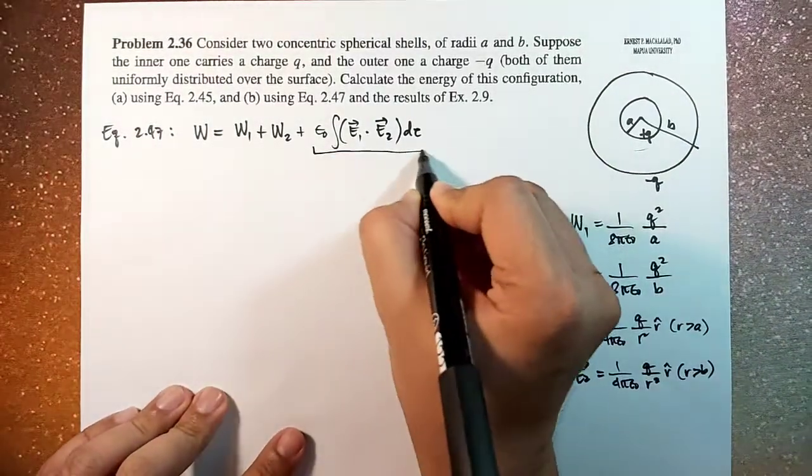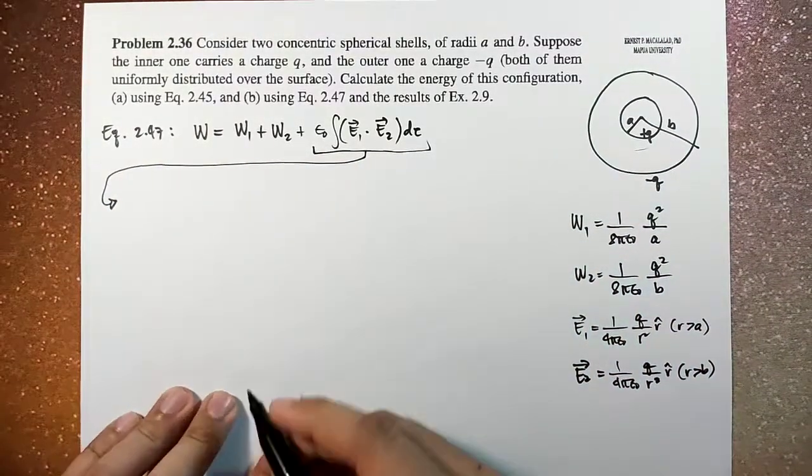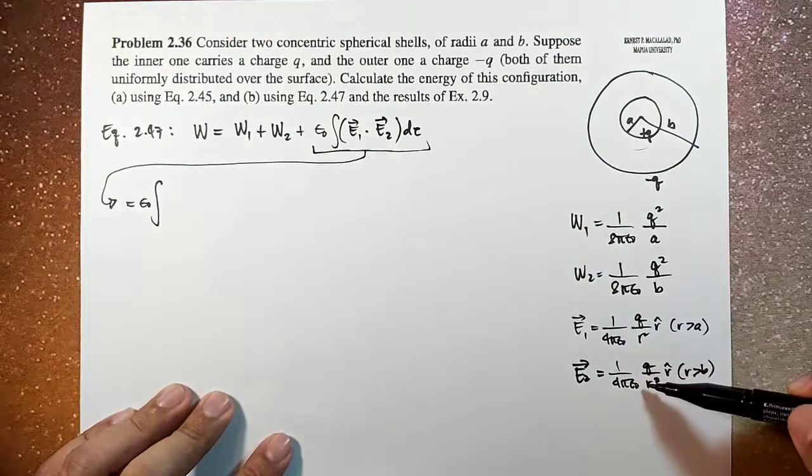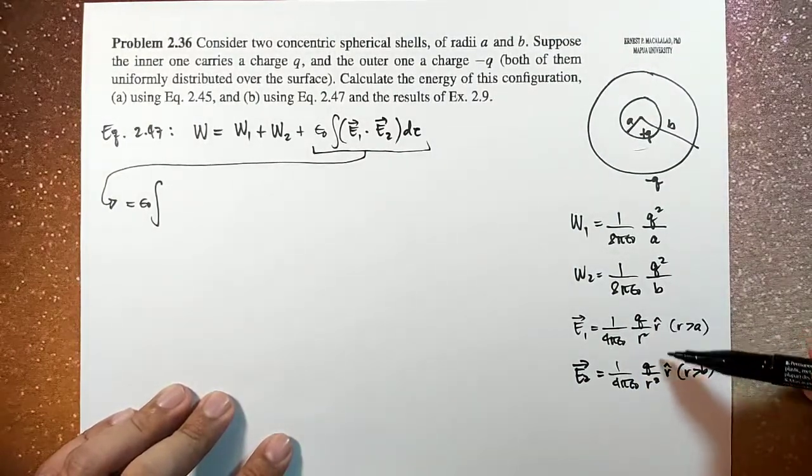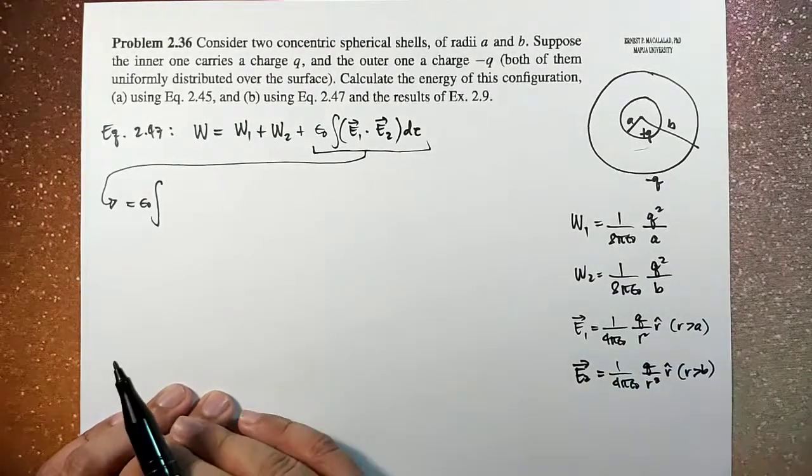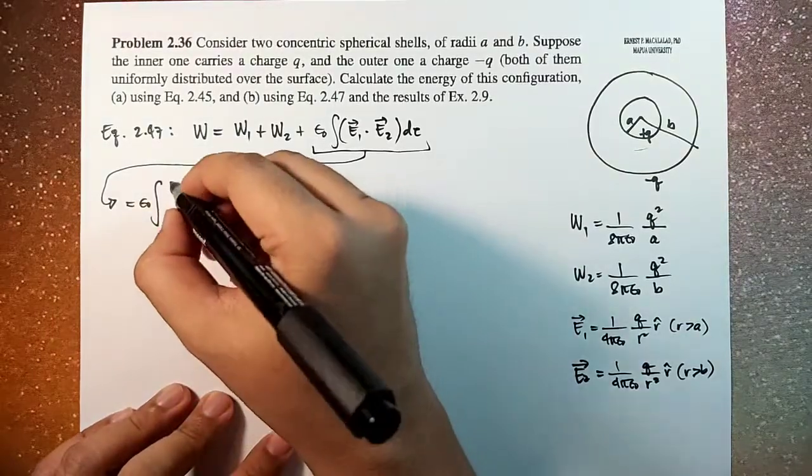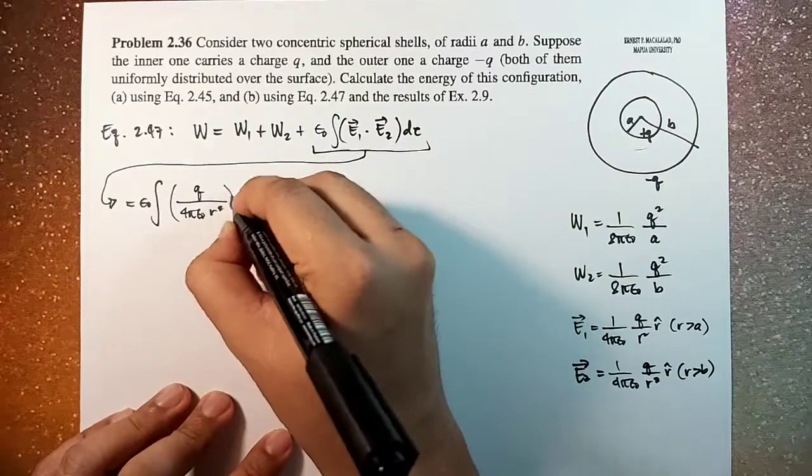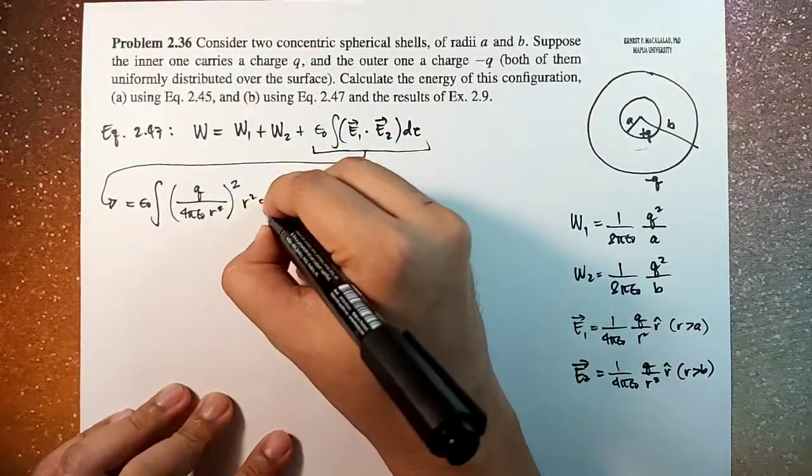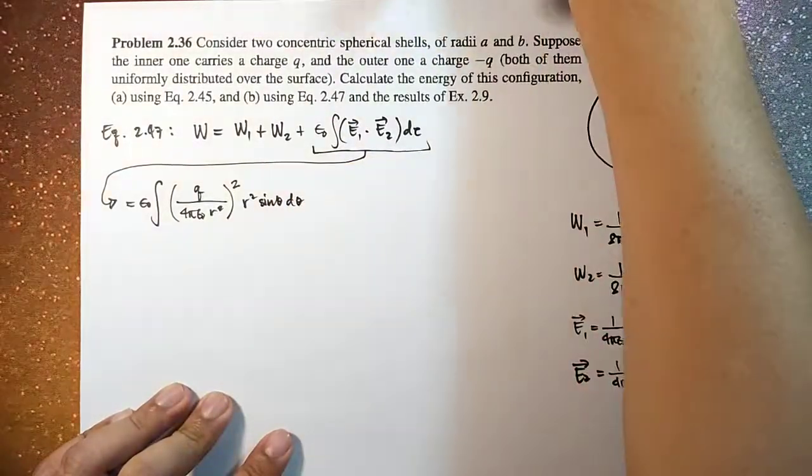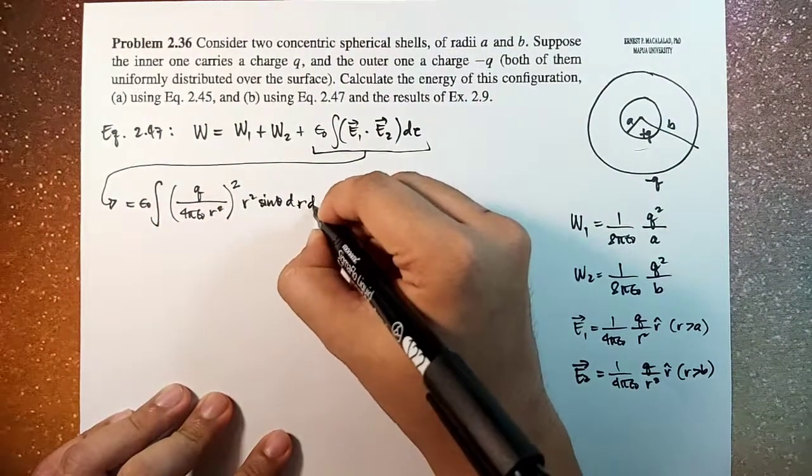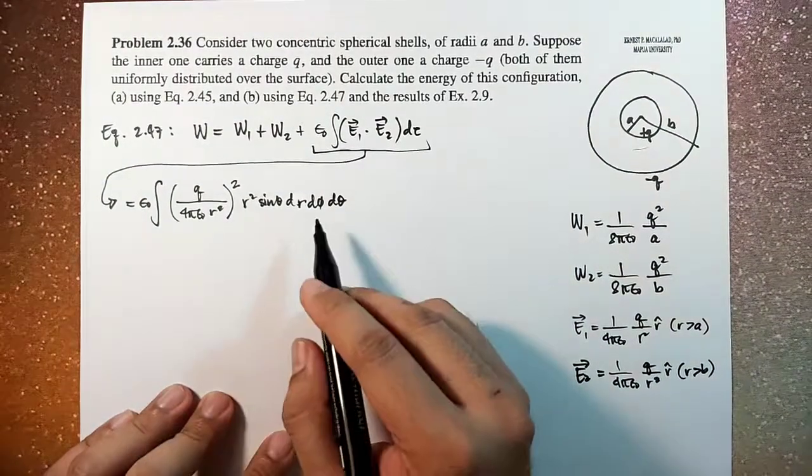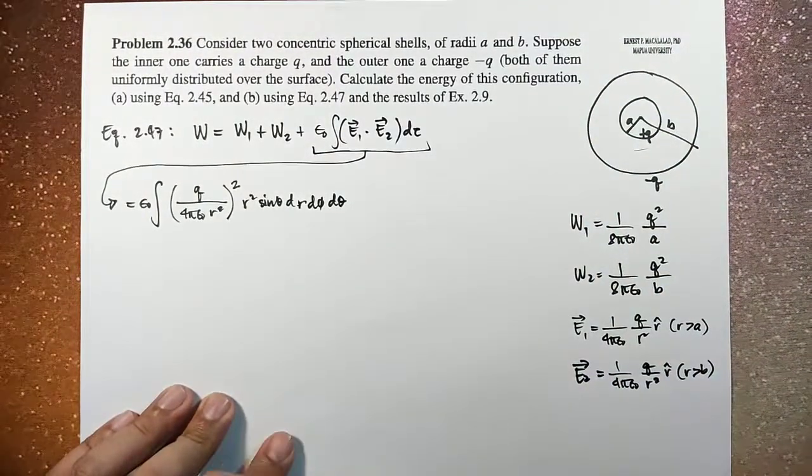Okay, so if we are going to focus ourselves first on the third term, the third term becomes epsilon naught times the integral of the dot product between these two. Because they are both pointing in the same direction, we just take the product of the two. And this will give us Q over 4 pi epsilon naught R squared squared. Then this is R squared, sine theta, dr, d theta, d phi.